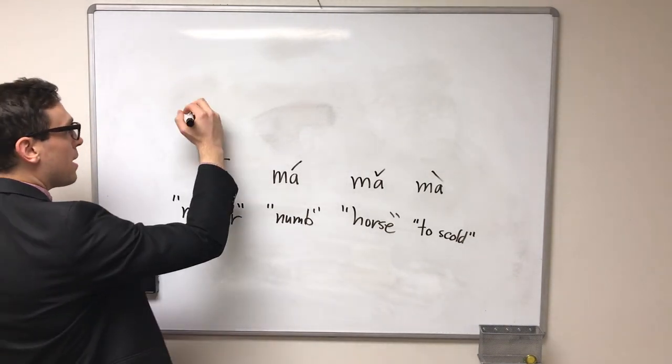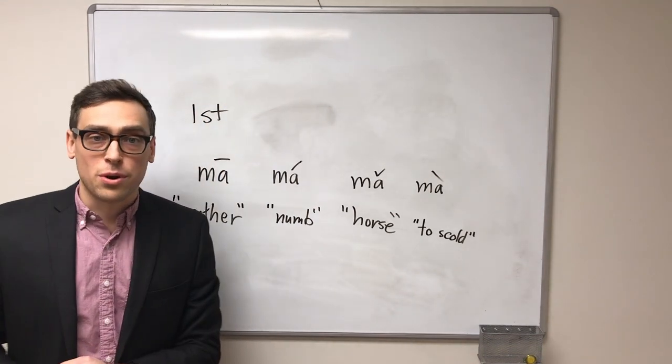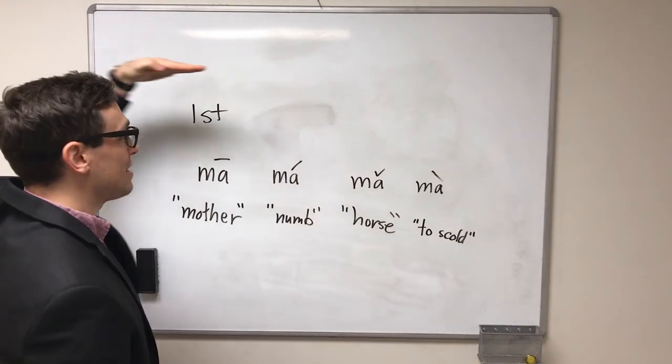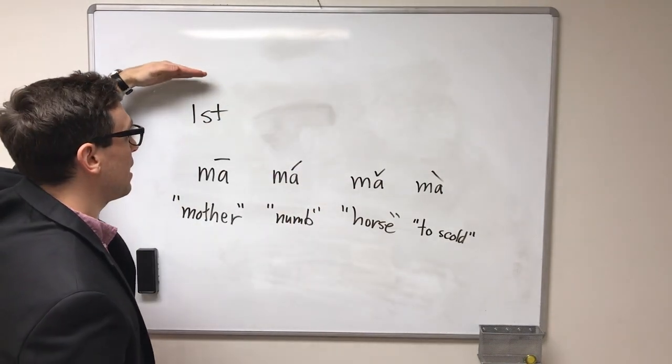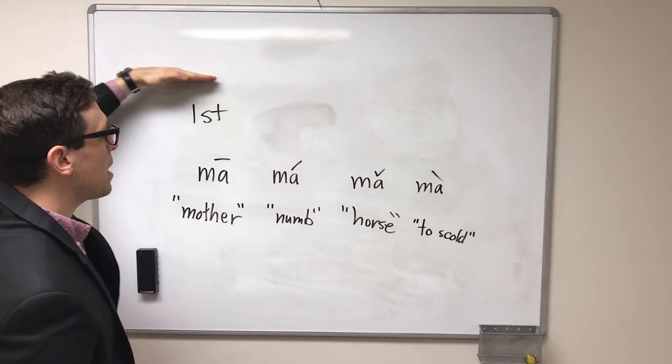We have them here. Ma is what we call the first tone. Ma, or the first tone in Chinese, starts very high in our register and stays flat. There's no change in pitch. It starts high and stays there all the way across. Ma, ma.